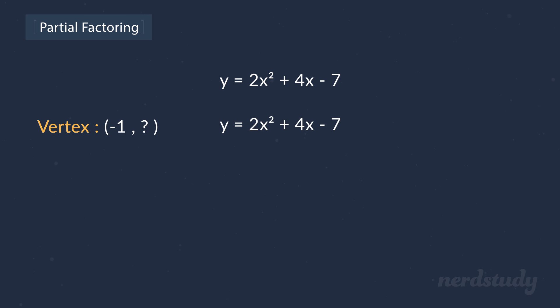Now that we know for sure that our vertex has an x value of negative 1, we plug it into our original quadratic equation to get the following. If we simplify this, we get y equals 2 minus 4 minus 7, which simplifies to y equals minus 9. Therefore, this means that our vertex lies at (-1, -9). Awesome!